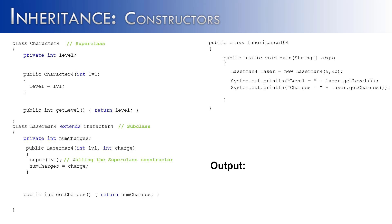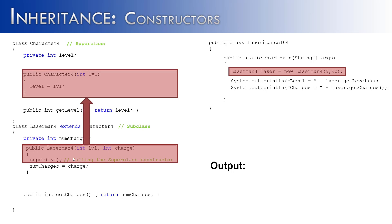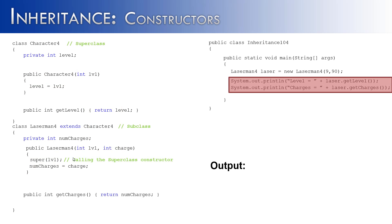So let's see what would happen if we were to step-by-step run through this program, and at the end we're going to output the level and the charges. We start by creating the object — it goes to the subclass constructor, but realizes right away that inheritance is involved and it needs to meet the needs of the superclass. That need is a level, so it sends the level information up to the superclass, meets its needs, then comes back down to the Laserman4 constructor and sets the charges through the second formal parameter. Once this is accomplished, all the values have been set — the level is 9 and the charges are 90.